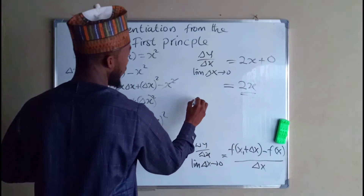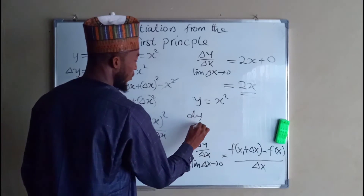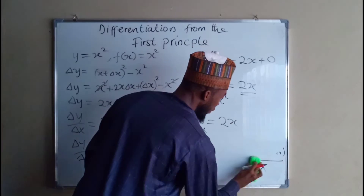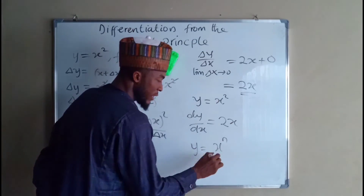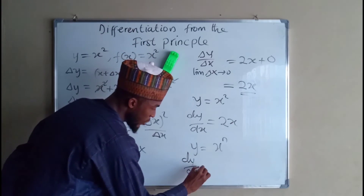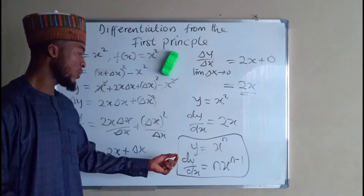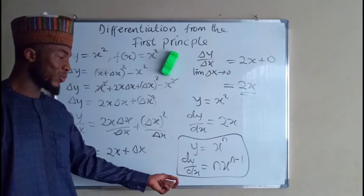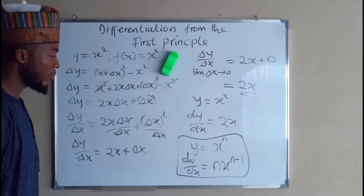So therefore, if y equals x squared, dy over dx is equal to 2x. In general, if y equals x to the power n, dy over dx would be equal to n times x to the power n minus 1. When y equals x to the power n, then the change in y with respect to x is equal to n times x raised to the power of n minus 1.